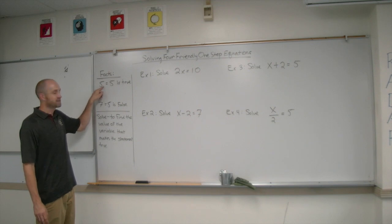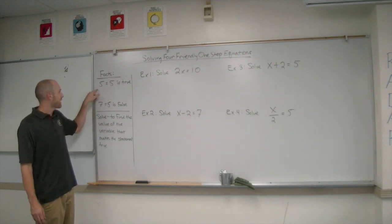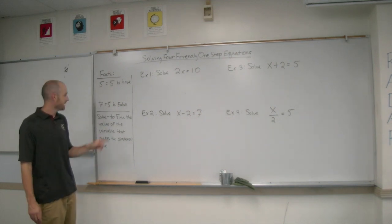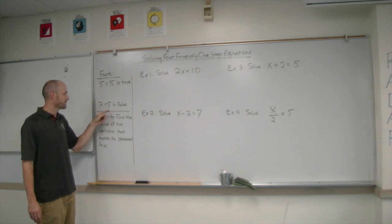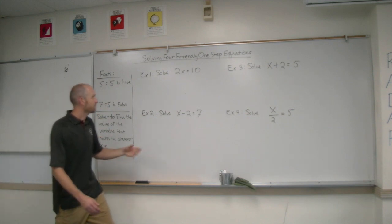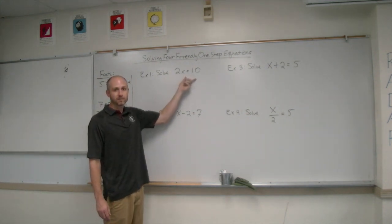A necessary fact for solving is to realize that this represents a true statement. 5 equals 5 is a true statement, and 7 equals 5 is a false statement.